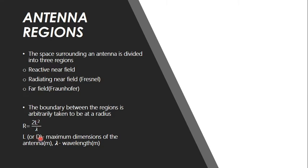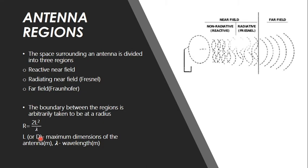Sometimes L is portrayed as D, so the boundary is written as 2D² by λ, where L or D is the maximum dimension of the antenna and λ is the corresponding wavelength. The region nearest to the antenna is the reactive region where there are no radiations — it is non-radiative in nature. In the Fresnel region the radiations start to emerge as E and H fields try to become orthogonal to each other. Once we cross the near field boundary we reach the far field or Fraunhofer region where the actual radiations start to travel.